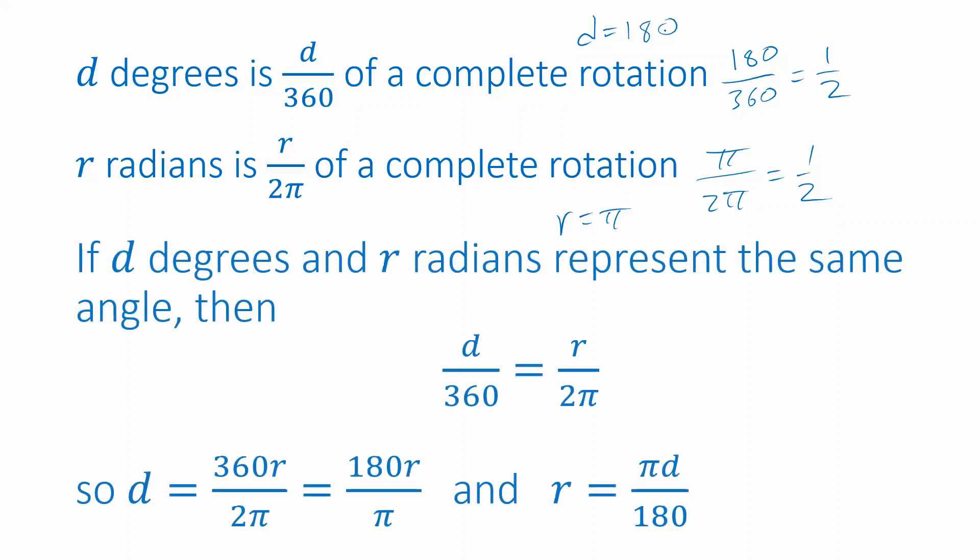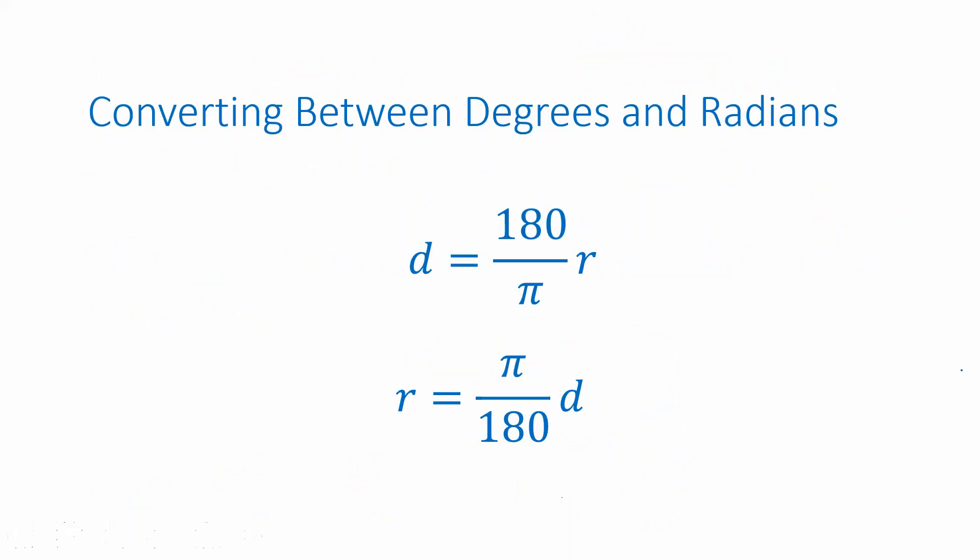So we can always come up with a relationship between degrees and radians this way using this formula, because d over 360 and r over 2π would represent the same fraction of a rotation if d degrees and r radians represent the same angle. So one thing you could do is rearrange this equation, like we have below here, in order to come up with these formulas. If I know the radian measure, I can plug that in to this expression to get the degree measure, or if I know the degree measure, I can plug it into this expression to get the radian measure.